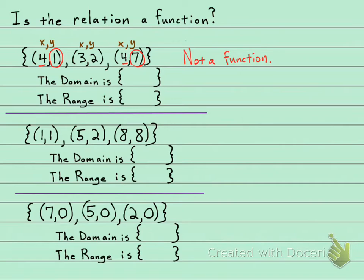And now it's also asking about the domain and the range. So remember, your domain is all your x values. So in this case, it would be four, three, and then four again. You don't have to write it again. We already have it once. So in my domain are the numbers three and four.